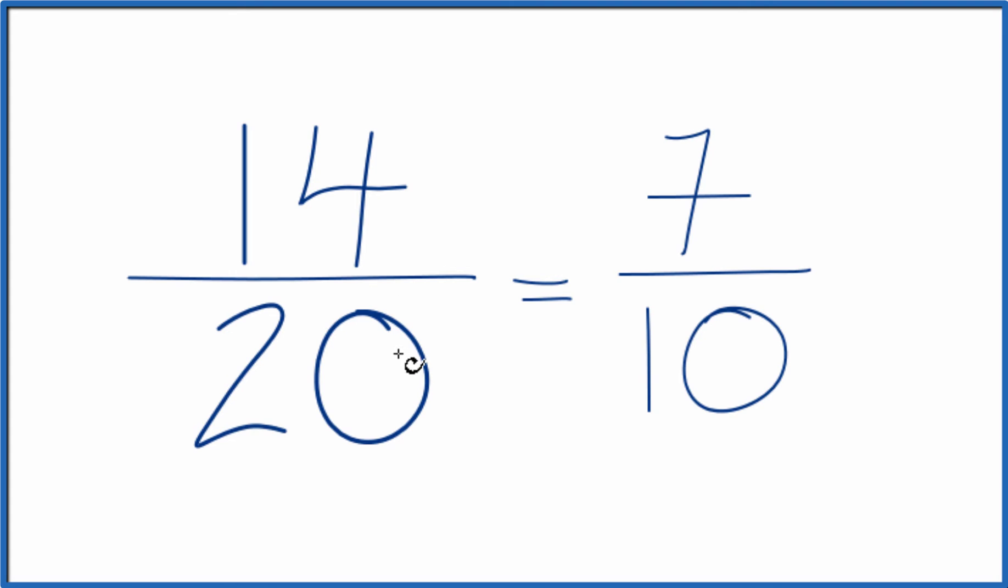If you divide 14 by 20 or 7 by 10, you'll get the same decimal answer, 0.7, because they're equivalent fractions. We reduced 14 20ths down to 7 tenths. Can't reduce that any further. This is Dr. B. Thanks for watching.